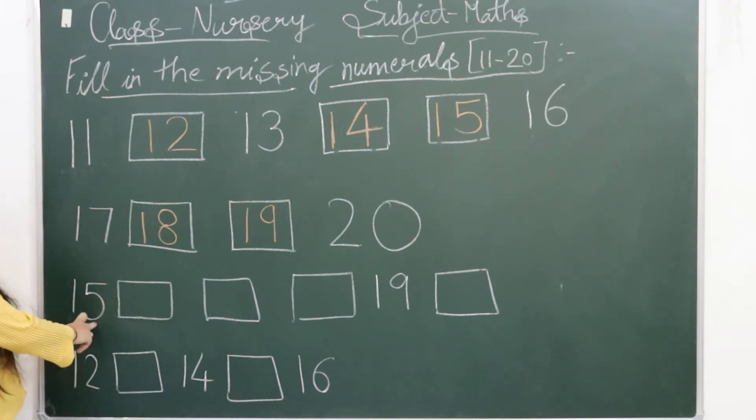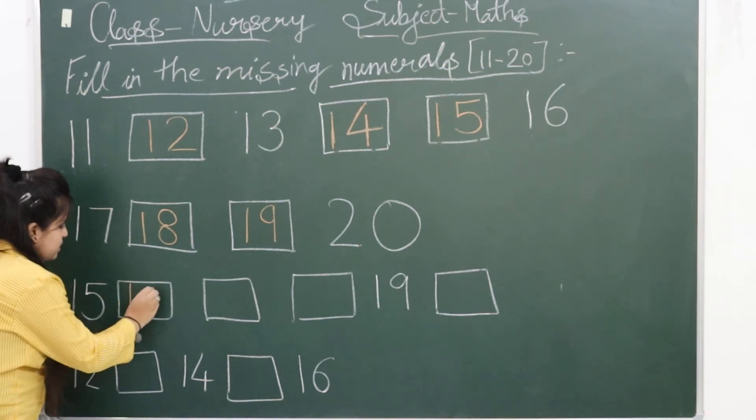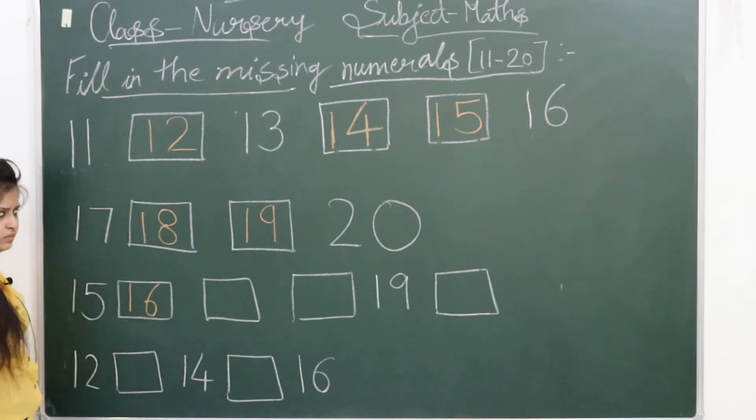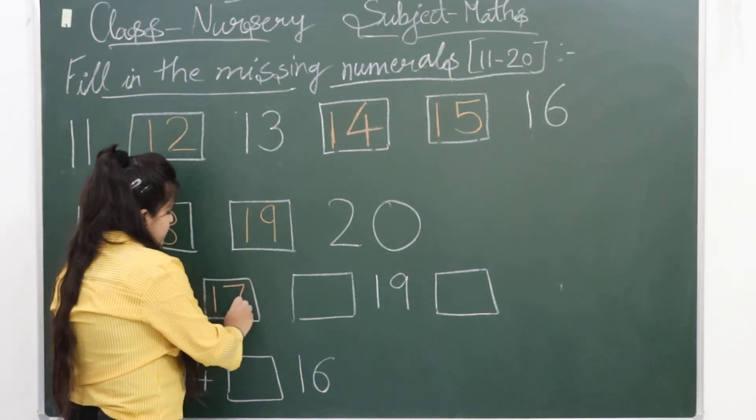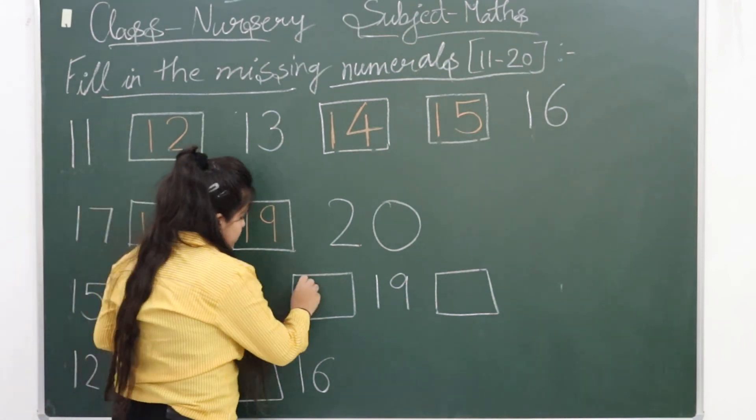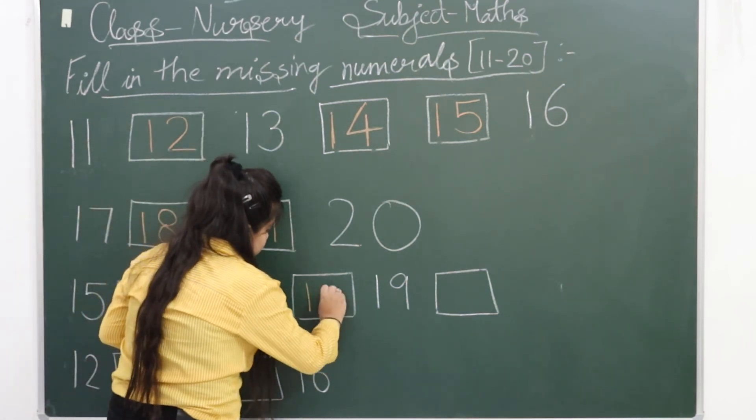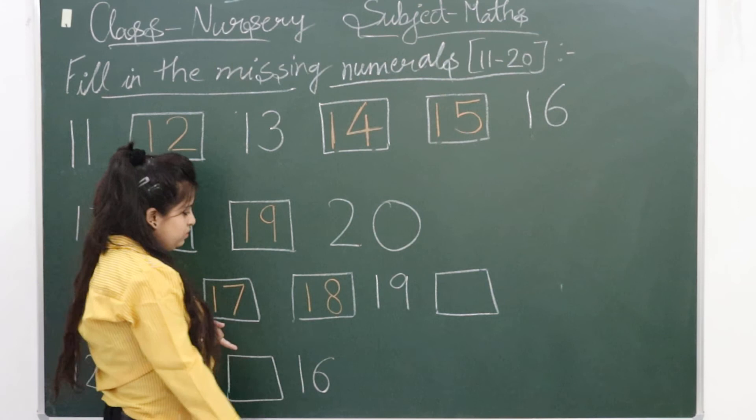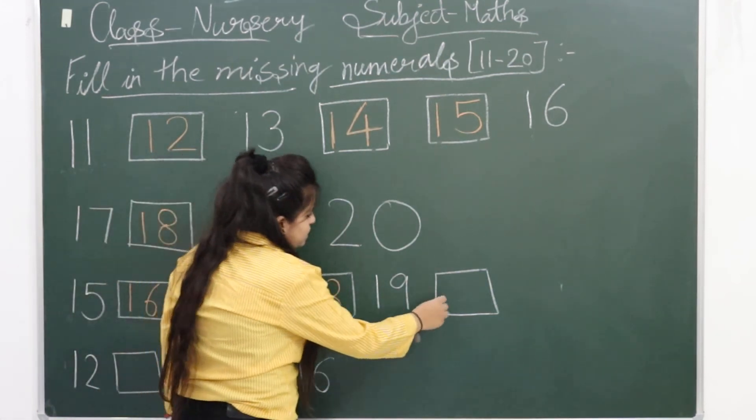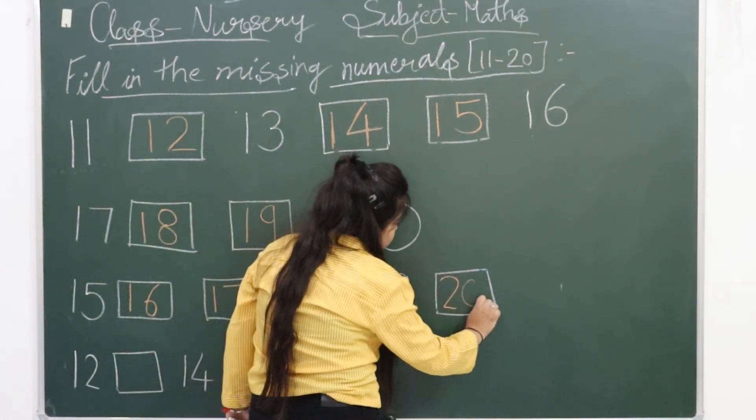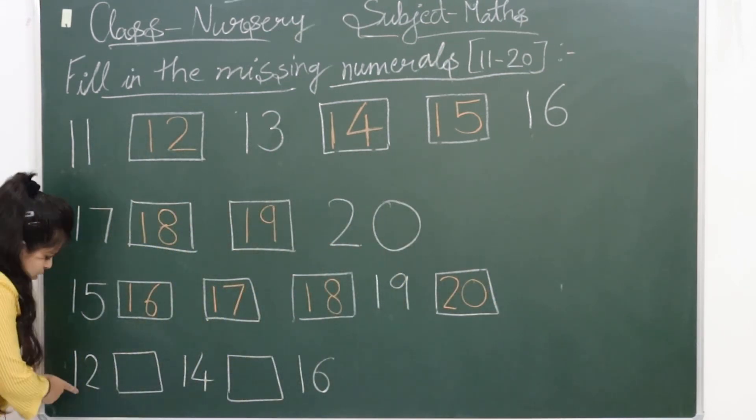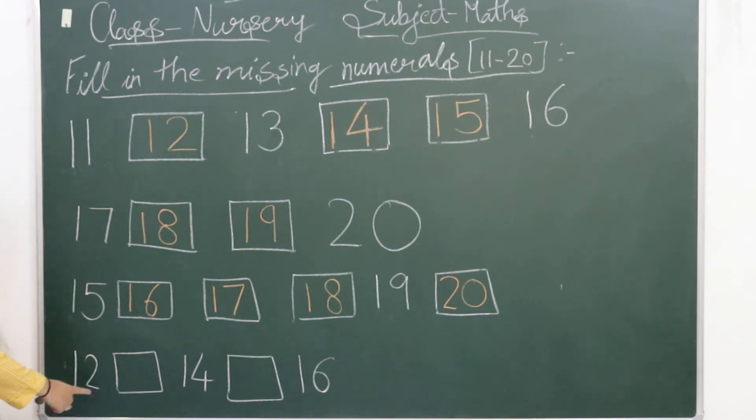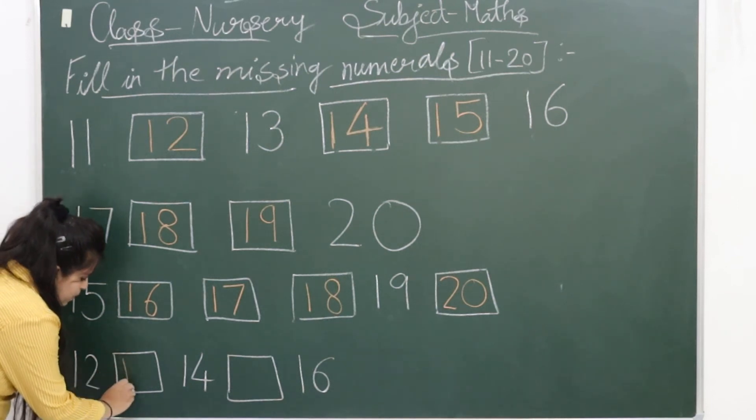So first, after 1-5 fifteen, what comes? 1-6 sixteen. Okay, last one: 1-2 twelve. What comes after 12? 1-3.